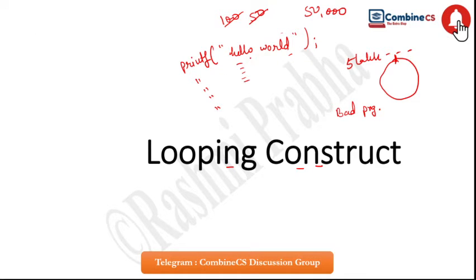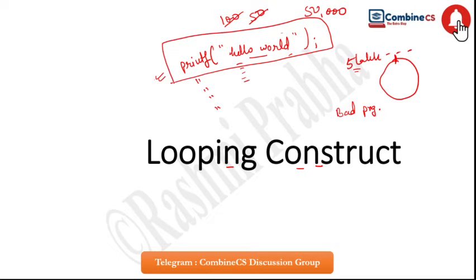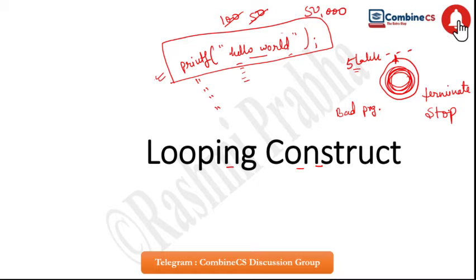We need to understand two things here. The problem is to print hello world five lakh times. Writing a single statement five lakh times is a complex task. To make it easy, we need a solution where we write the statement once and tell the program how many times to execute it. Also, if hello world runs continuously without stopping, you must give a terminating condition so the loop can stop.